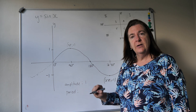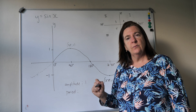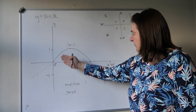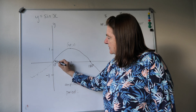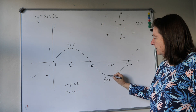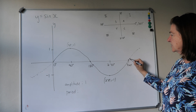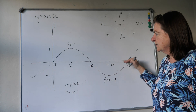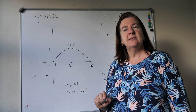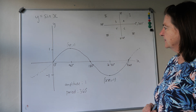The period is how many degrees it takes to complete one full cycle before it repeats. Looking at the standard sine curve, at zero it starts climbing, reaches its maximum, comes down, turns, and climbs again from 360 — one full cycle. So the period of the sine curve is 360 degrees. And that is our standard sine curve.